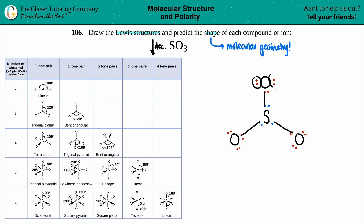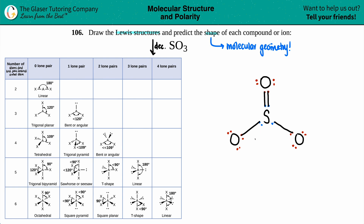Now for all the oxygens, since they're all the same, they have two, four, six, seven electrons — they want that octet, they want that extra electron from the sulfur. Binding it up dot to dot: this oxygen now has two, four, six, eight electrons. Same thing for the second and third oxygens — each gets the octet.